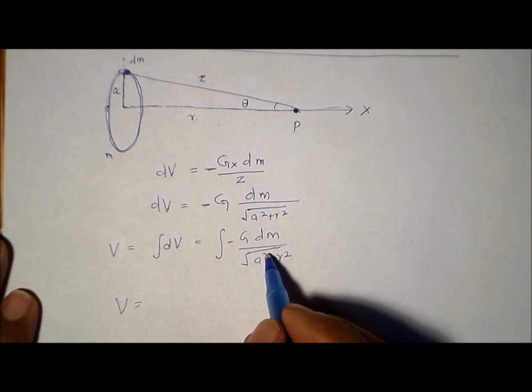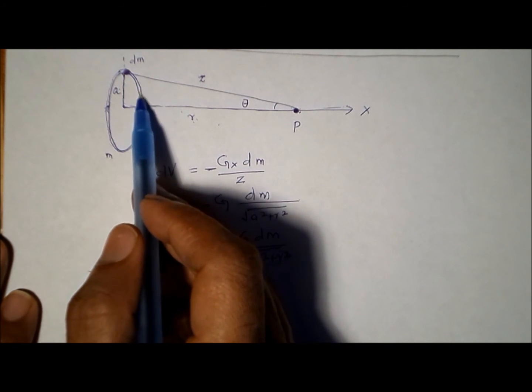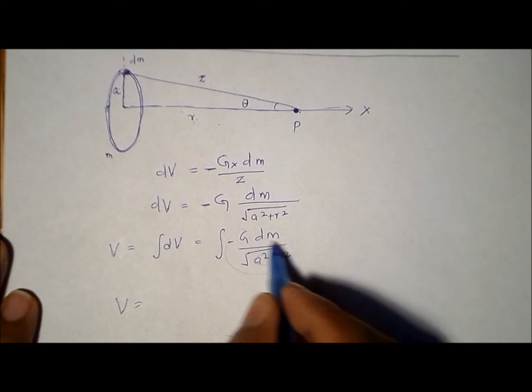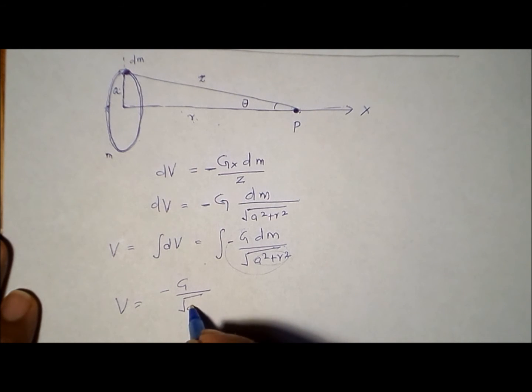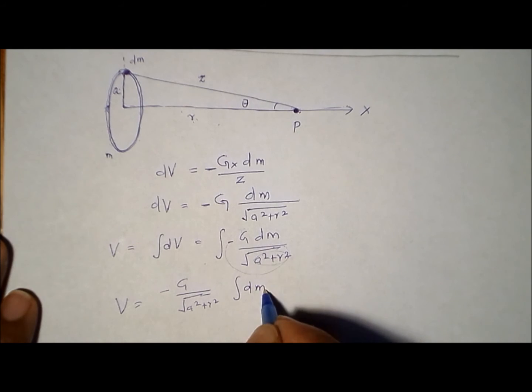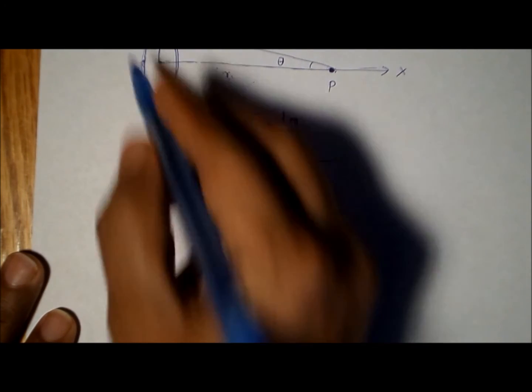For all these different masses, a and r stay the same. So in other words, a and r are independent of m, irrespective of where this small mass dm lies. So we can take this whole thing out of this integral equation, and we get G divided by square root of a squared plus r squared, integral of dm.